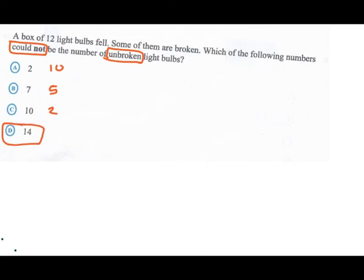If twelve in the box at all times, we must have twelve when we add them up. So ten plus two, seven plus five, two plus ten. One would represent the broken, one would represent the unbroken. But we cannot have more unbroken than we actually have in the box. That's not possible.